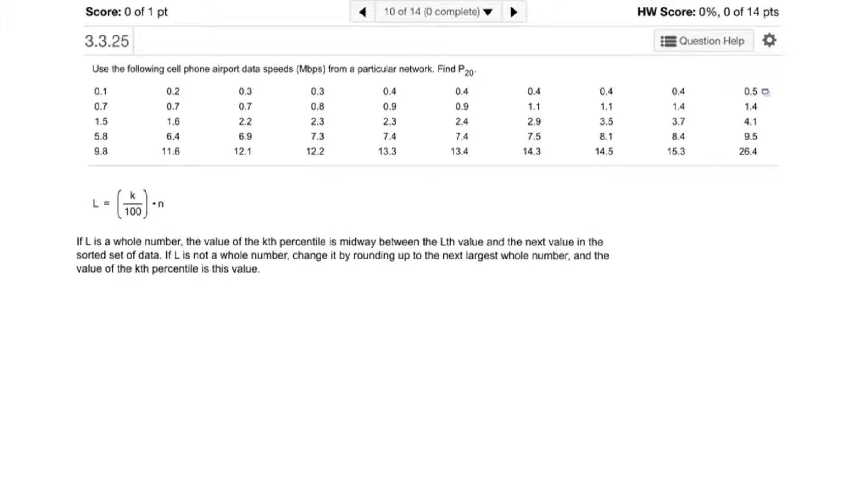In order to find a percentile ranking for a particular data value, we will use the formula L equals K over 100 times N, where K is the percentile data value that I'm looking for and N is the number of data values in the data set. We are looking for the 20th percentile, so we will substitute 20 for K.